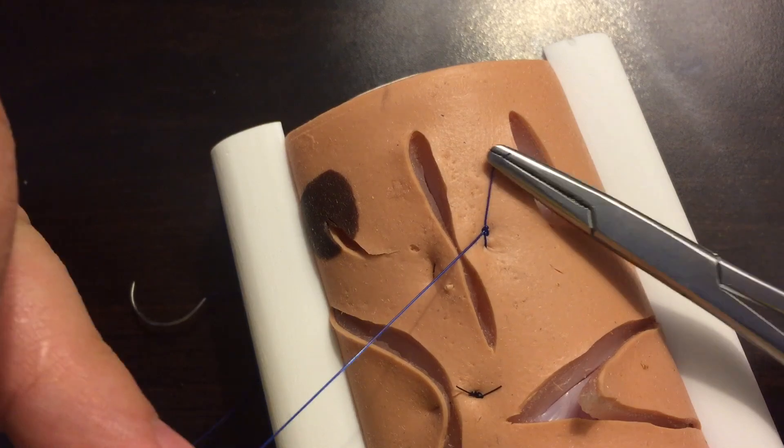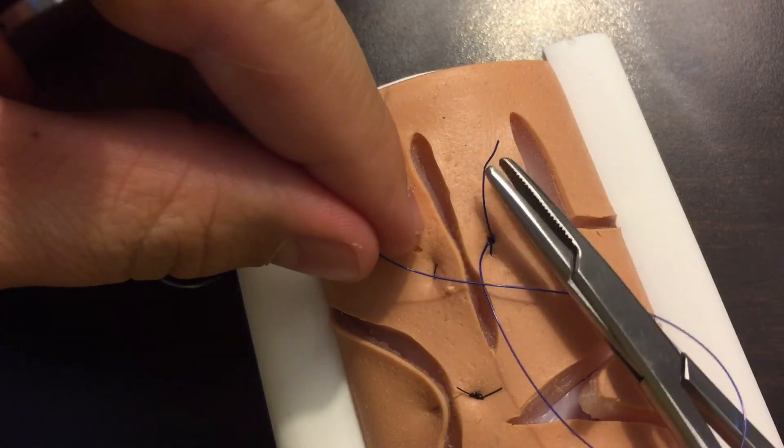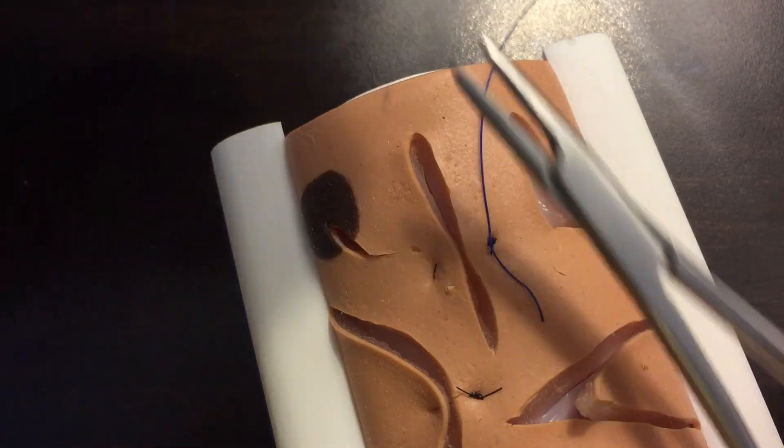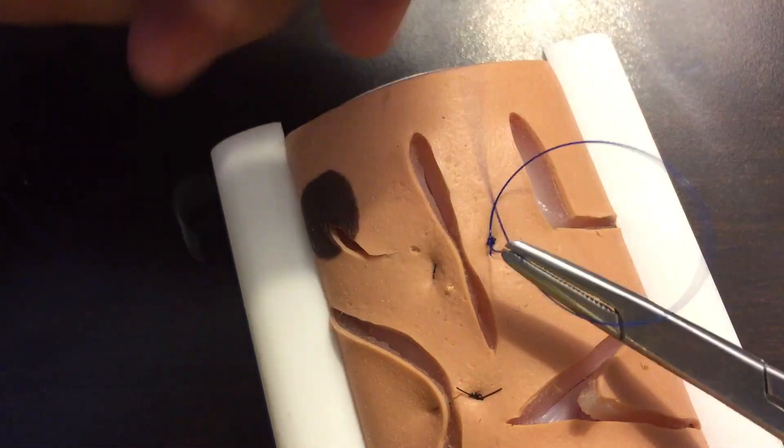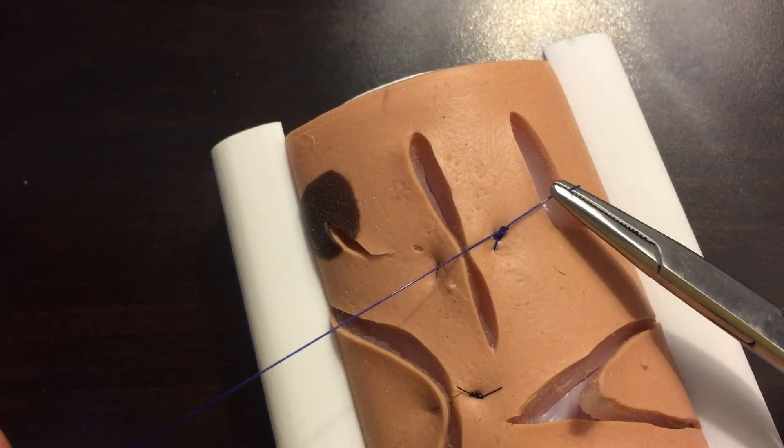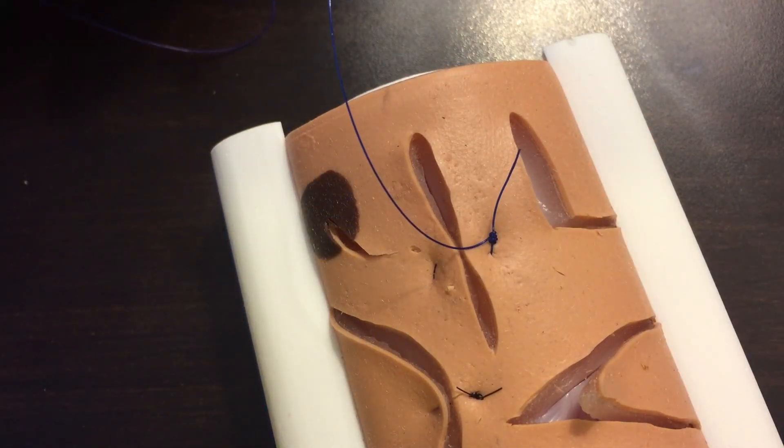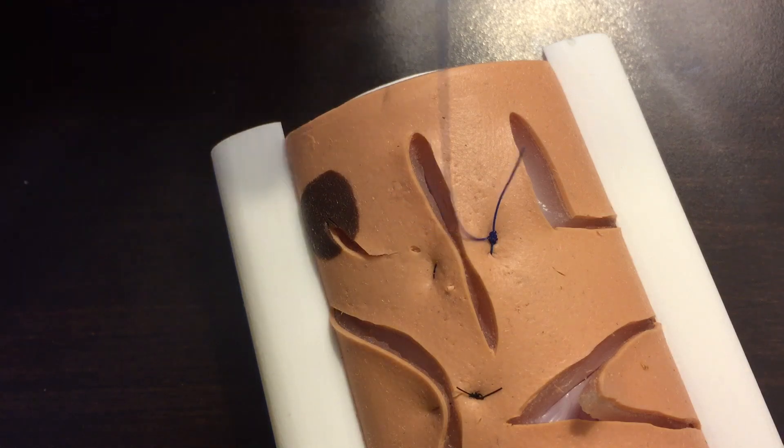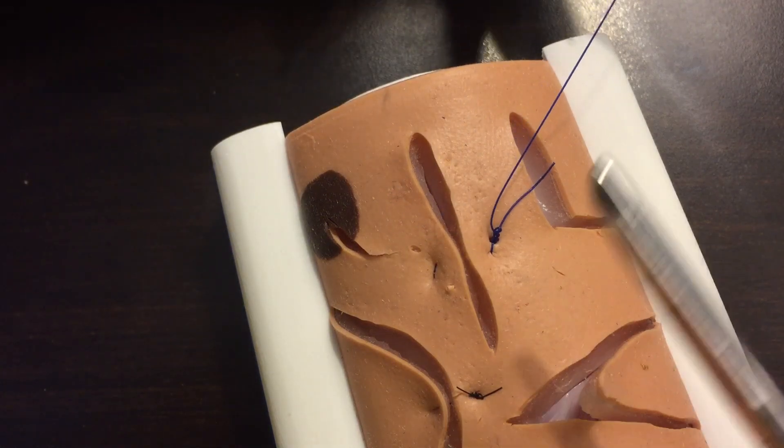The vertical mattress and the horizontal mattress can be used for a lot of the same types of situations where you've got a little bit of tension and you need to have a stronger suture to pull the edges together.